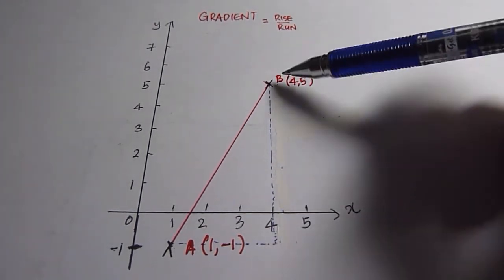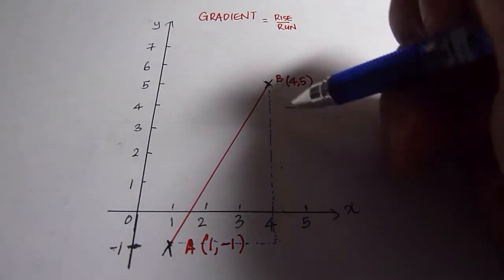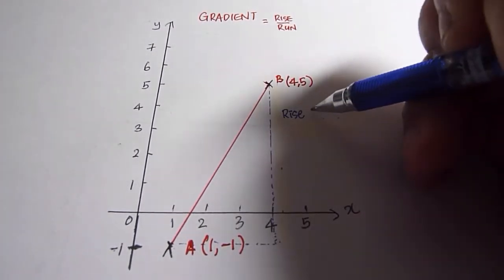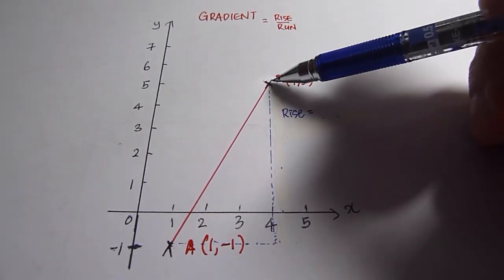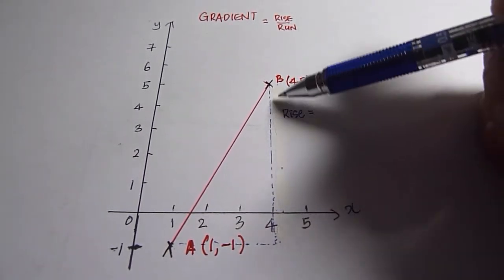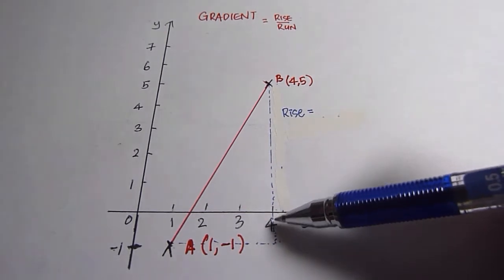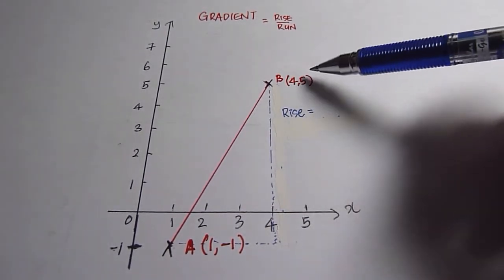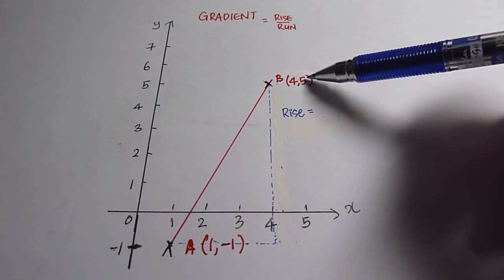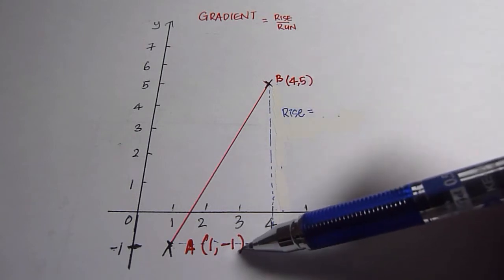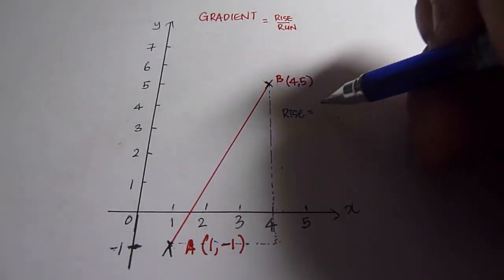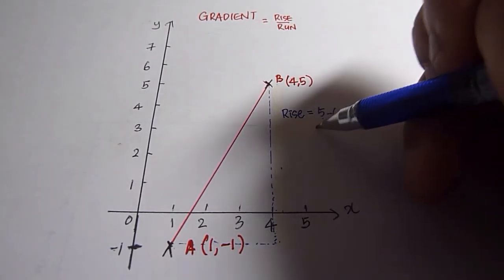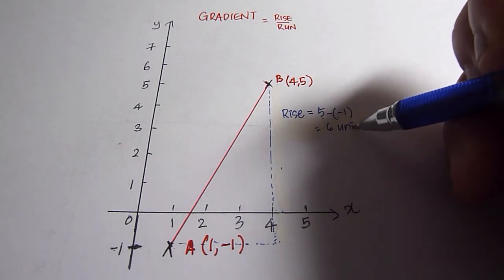Now, to find out what is the change, which is the rise, it is equal to five units here plus one unit here, which is the same as using the y-coordinate of B minus the y-coordinate of A, resulting in six units.